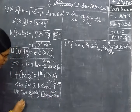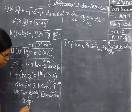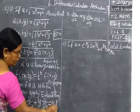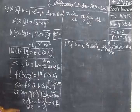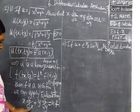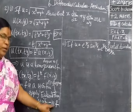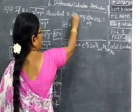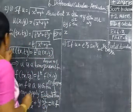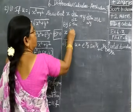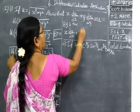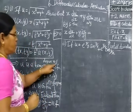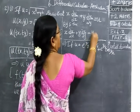Euler's theorem states: for the formula, x into ∂f/∂x plus y into ∂f/∂y equal to n·f. By Euler's theorem, x into ∂u/∂x plus y into ∂u/∂y equal to n·u.